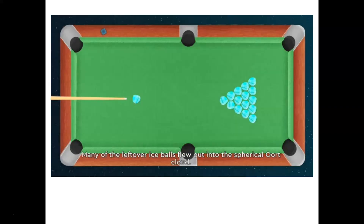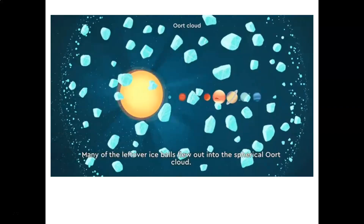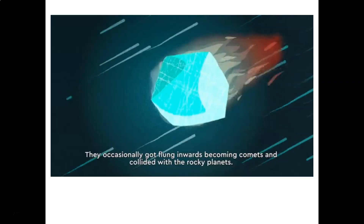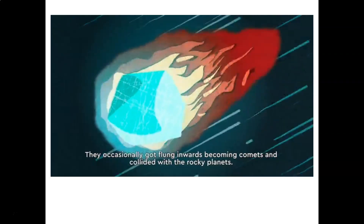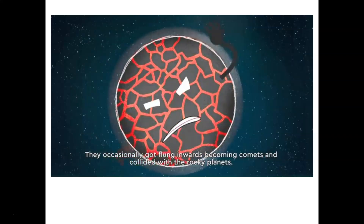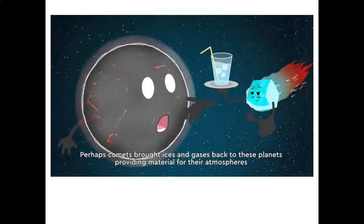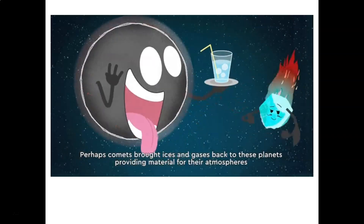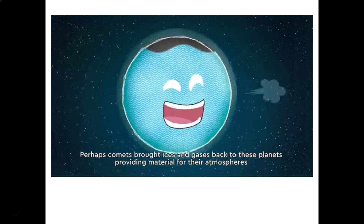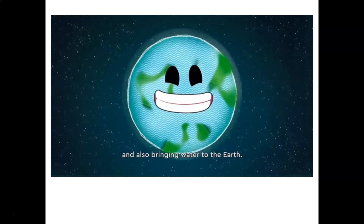Many of the leftover ice pools flew out into the spherical Oort cloud. They occasionally got flung inwards, becoming comets, and collided with the rocky planets. Perhaps comets brought ices and gases back to these planets, providing material for their atmospheres and also bringing water to the Earth.